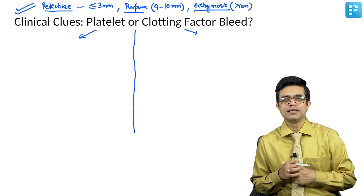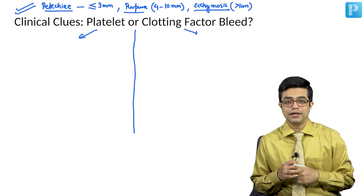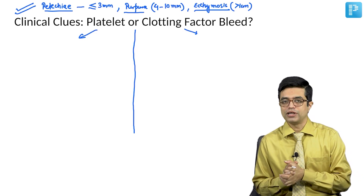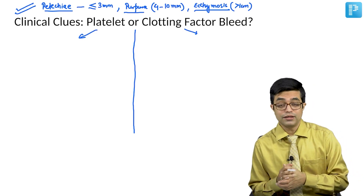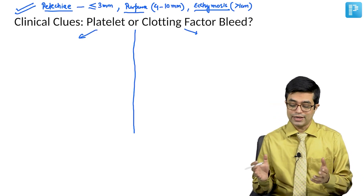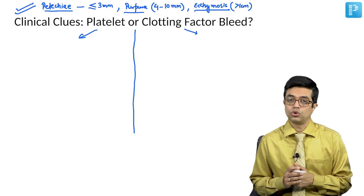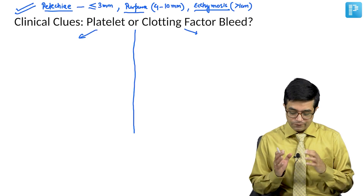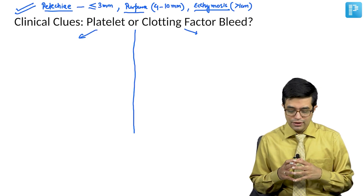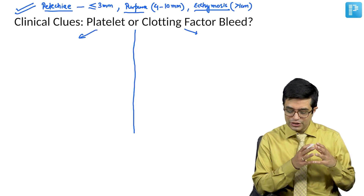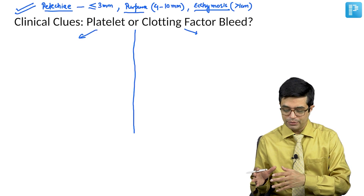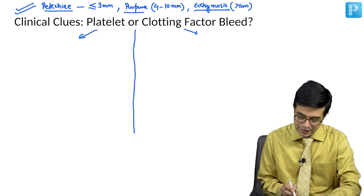At two different places in the older Nelson, similar values have been used. In the new Nelson, this categorization is no longer present. With this in mind, let us talk about the platelet and clotting factor-based differences.